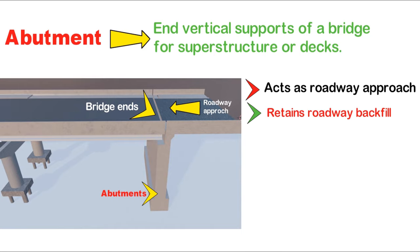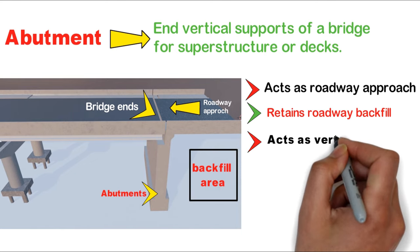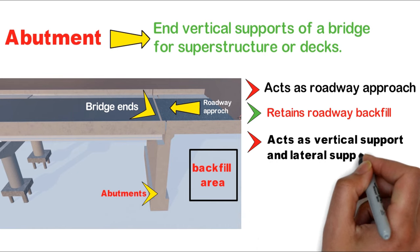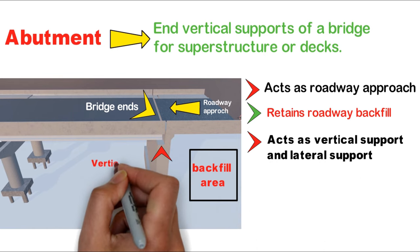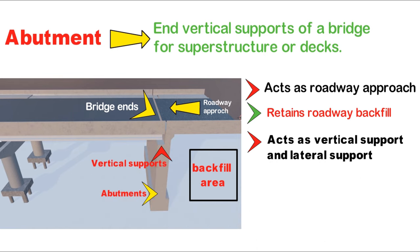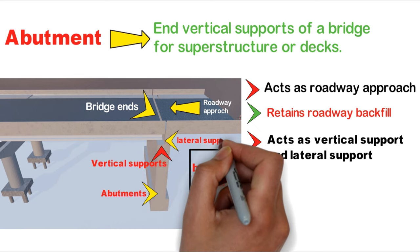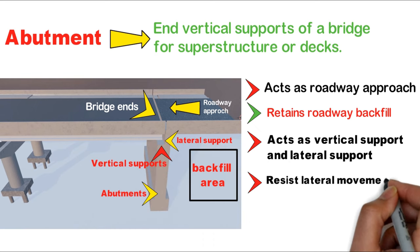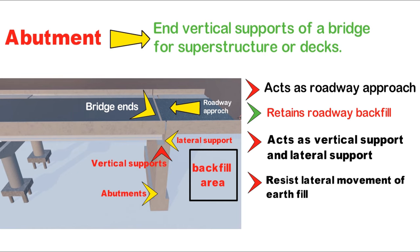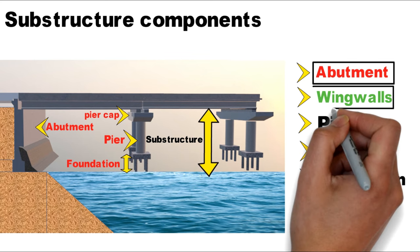The abutment retains the roadway backfill and acts as both a vertical support and a lateral support. The main function of the abutment is to resist the lateral movement of the earth fill — the backfill has a tendency to move inward and the abutment resists it.